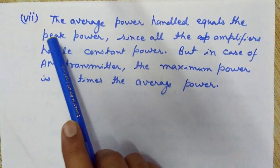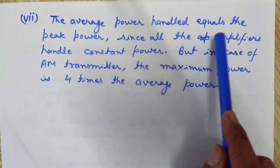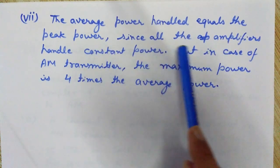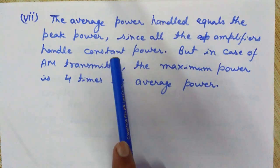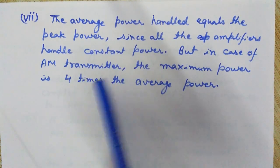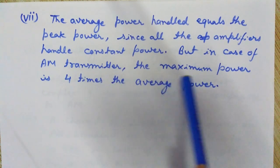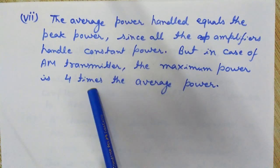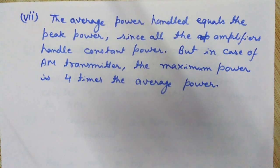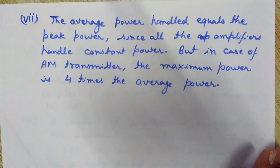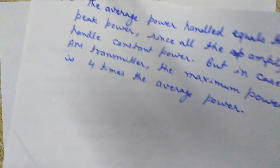The seventh and last advantage of FM is that average power handled equals the peak power, since all amplifiers handle constant power in FM. In an AM transmitter, the maximum power is four times the average power. This concludes the seven advantages of FM over AM, and now we will see the advantages of AM over FM.